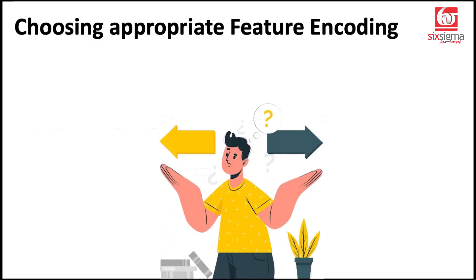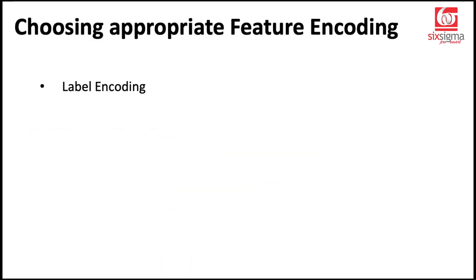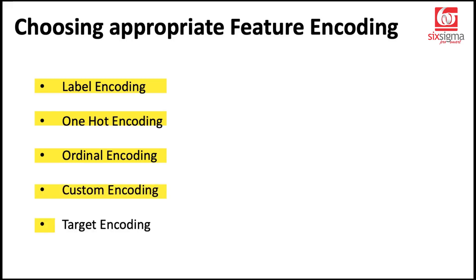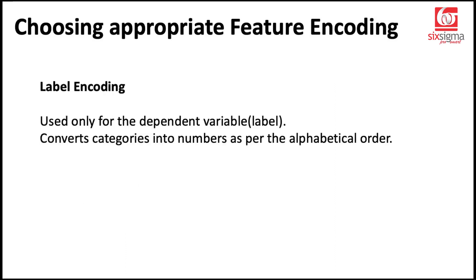Choosing the appropriate feature encoding — there are a few choices. We can perform label encoding, one-hot encoding, ordinal encoding, custom encoding, or target encoding. This is not an exhaustive list; there are at least 10 more different types, but if you know these, you'll be sorted for more than 95% of the cases.